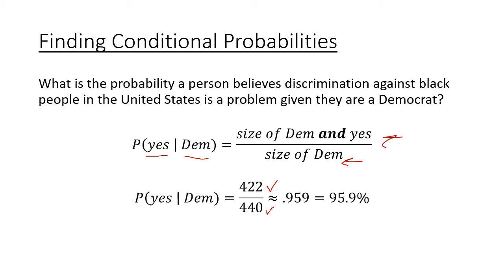That's 95.9%, which means if you know someone is a Democrat, you can be almost certain they believe discrimination is a problem. It's really important to note the difference between these last two questions: if I know they are a Democrat, I can almost guarantee they believe discrimination is a problem. But if I know they believe discrimination is a problem, it's only about a 50-50 shot they're a Democrat. The same group of people is involved, but what changes is the given — the sample.